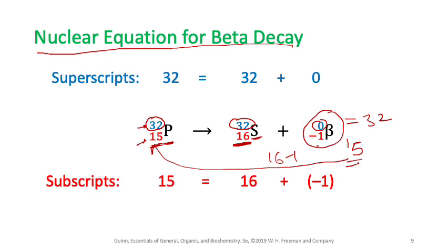Notice that phosphorus converted into sulfur during this decay. The element changed because the number of protons changed — from 15 to 16. Whenever the number of protons changes, the entire element changes. This is how beta decay nuclear reactions work.